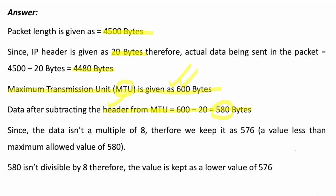Since the data isn't a multiple of 8, we need to find a value divisible by 8, because the offset is calculated by dividing by 8. Therefore we keep it as 576. If you divide 576 by 8 you get an exact value of 72. Since 580 isn't divisible by 8, we use the lower value of 576. The maximum we can send is 580, but we can send a lower value — it must be a multiple of 8, which is 576.